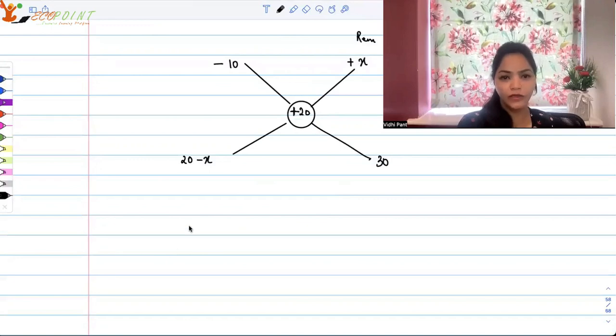So X minus 20 upon 30 should be equal to 1 by 4. That was 1 by 4, the ratio in which he has sold. So 1 fourth of the things and 3 fourth of the things.